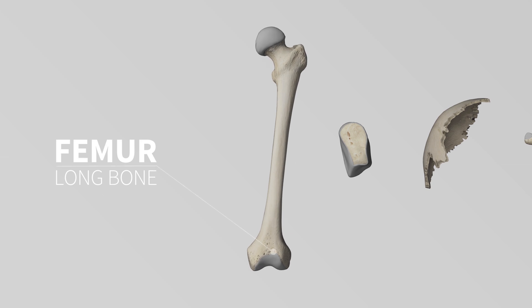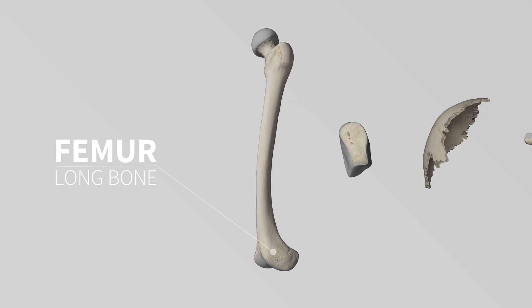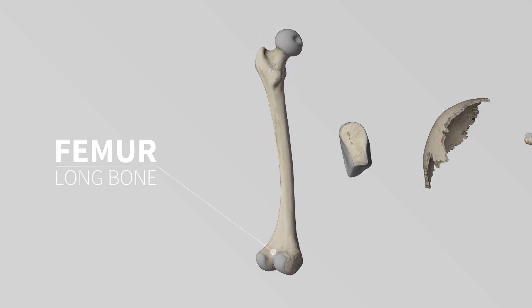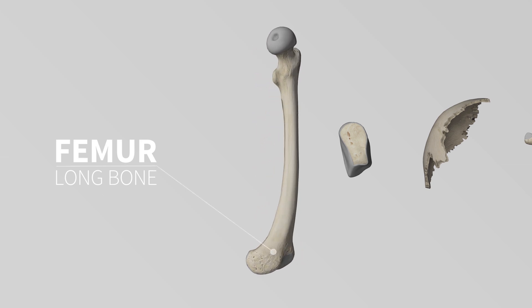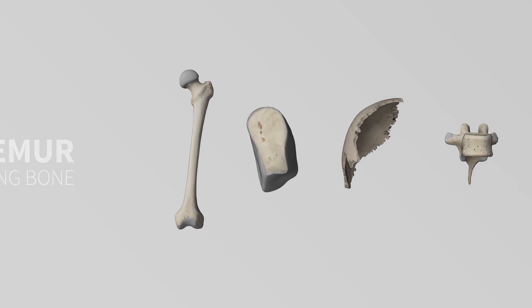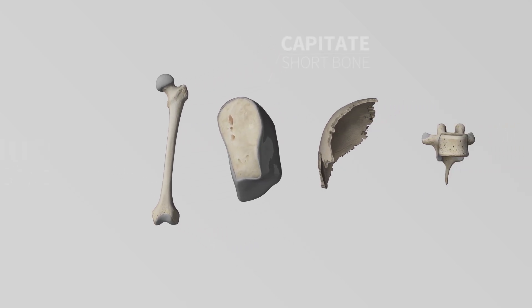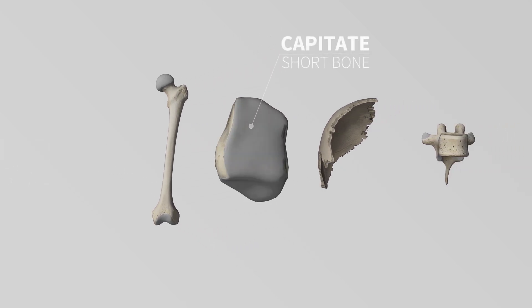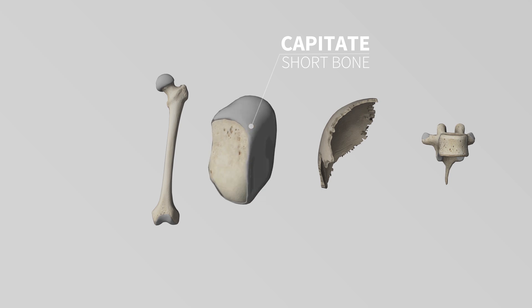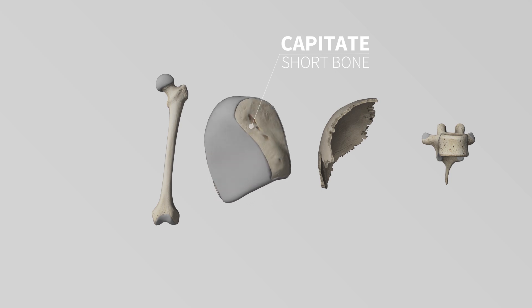Long bones have a tubular shaft and are found in the limbs, such as the femur. Short bones are cuboidal and are found in the ankle and wrist, such as the capitate bone of the wrist.